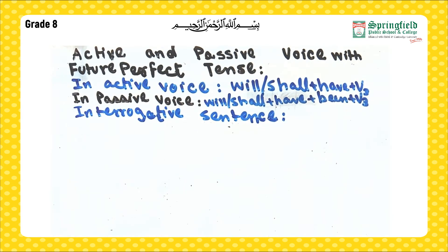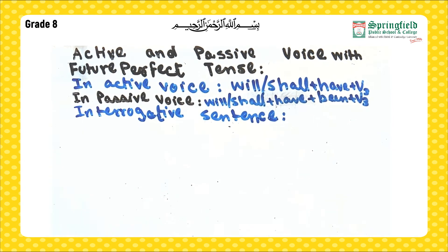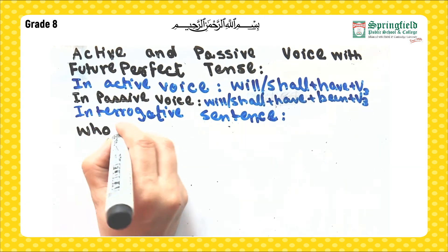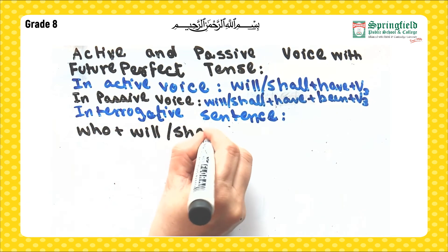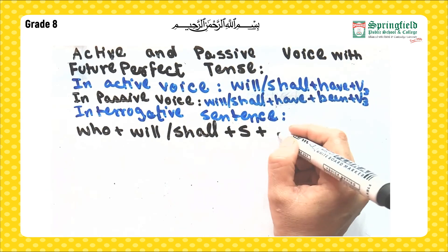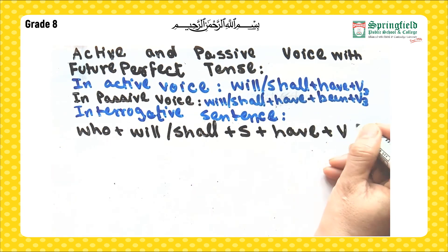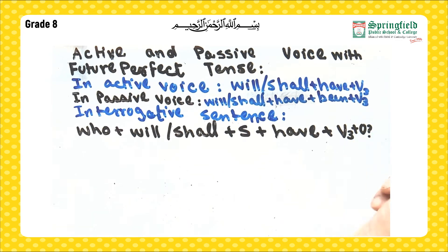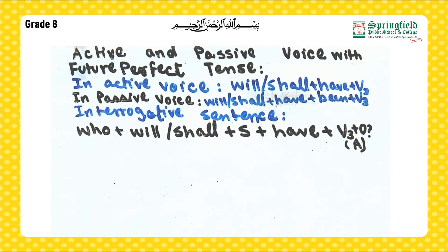Now, if we have a question word and the question word is 'who,' then the sentence construction becomes: who plus will or shall plus subject plus have plus verb third form plus object, question mark — this is in active voice.